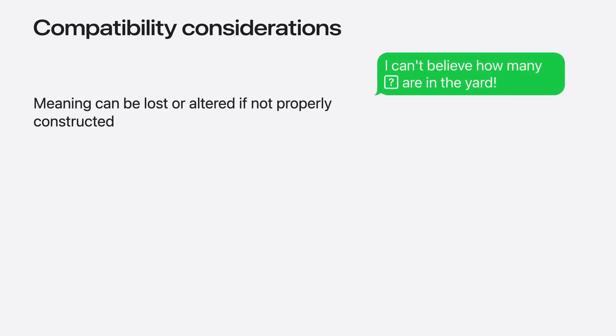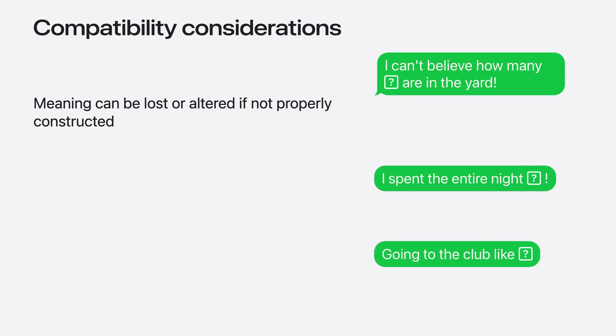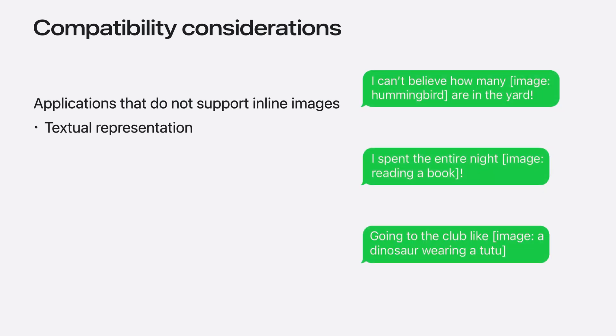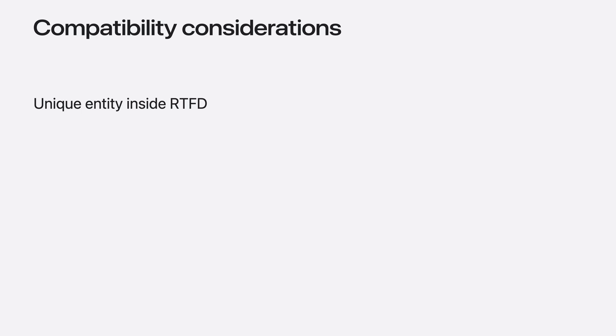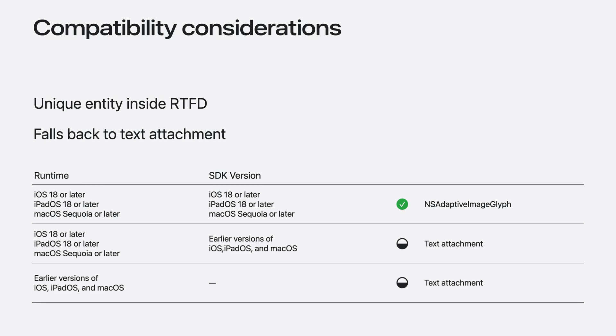Before we look at some advanced uses of NSAdaptiveImageGlyph, let's take a moment to talk about important compatibility considerations for your app. Like the text they are displayed with, image glyphs carry important semantic meaning that may be lost or altered if not properly conveyed, so care must be taken when handling fallback behavior in unsupported contexts. It is vital that this important information is not simply dropped. If your app does not support inline images, consider using a textual representation sourced from the content description. For more fundamental incompatibilities, you may consider not opening the document at all on unsupported systems. Image glyphs stored in the RTFD format are encoded to be backwards compatible with any rich text view, and in unsupported environments, the image glyphs will automatically fall back to a standard text attachment.